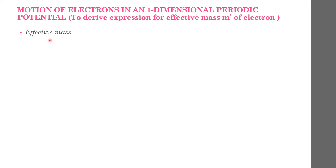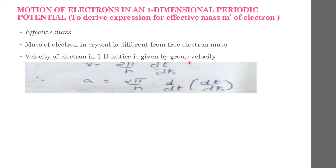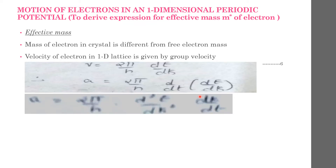Next, we will derive the effective mass. The mass of the electron in a crystal is different from the free electron mass. The velocity is v = (2π/h)(dE/dK), equation 3. Differentiating to find acceleration: a = dv/dt = (2π/h) × d/dt(dE/dK), which gives a = (2π/h)(d²E/dK²)(dK/dt), equation 7.